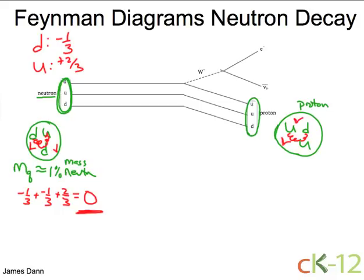Let's check charge conservation. Well, we got two ups, so that's a plus two thirds, plus a plus two thirds. And we have one down quark, so that's a minus one third. And that all equals plus one, as it should, because we know protons have the same charge as the electron, but positive.